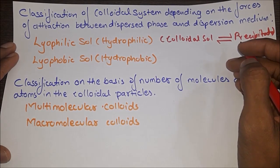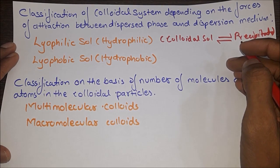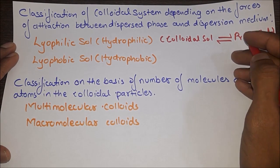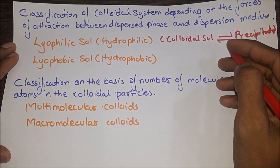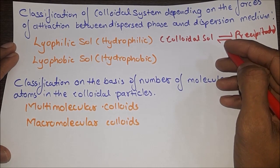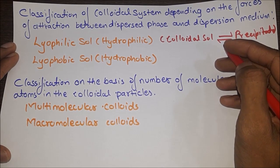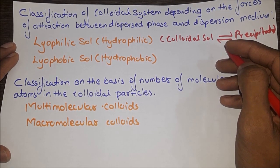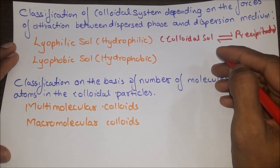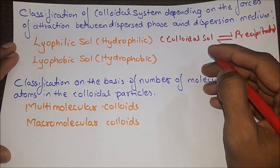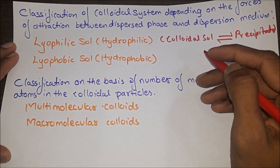Lyophobic solution: the dispersed phase and dispersion medium do not attract each other. It is irreversible — colloidal solution cannot be reconstituted after precipitation. Viscosity is nearly the same as that of the dispersion medium (water); surface tension is the same as that of the dispersion medium. Particles can be easily detected under ultra microscope. Substances with low molecular weight form lyophobic solutions. Example: solutions of metals and metal sulfides.